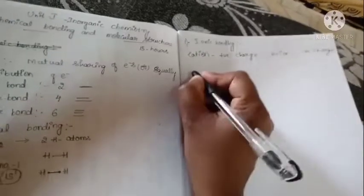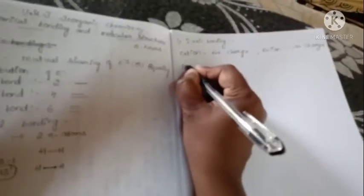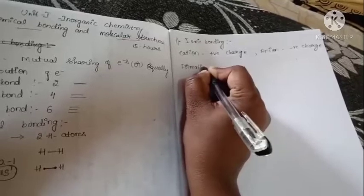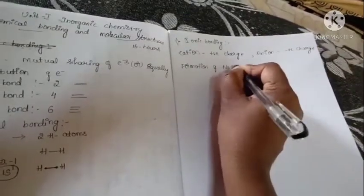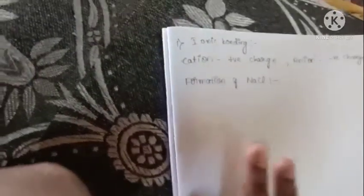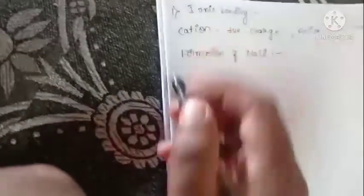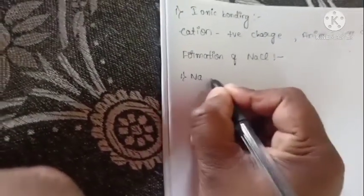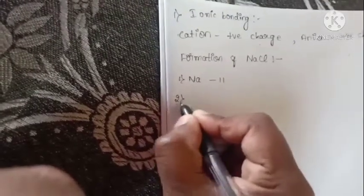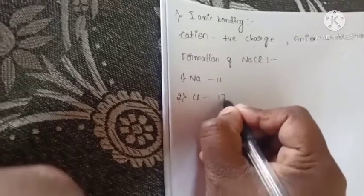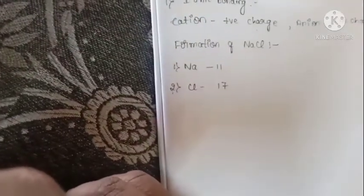In your syllabus they give an example for formation of NaCl. First we have to know about the atomic number of sodium and chlorine and write the electronic configuration for those elements. Sodium's atomic number is 11. Chlorine's atomic number is 17.